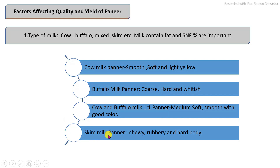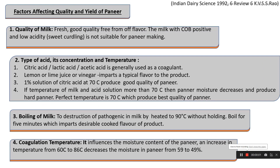If skim milk is used, we get paneer which is hard on the surface, rubbery, and chewy in property. Mostly, in order to get good quality paneer, mixed milk in 1:1 proportion of cow and buffalo is best, giving soft paneer with good textural property and good color. Other important parameters for good quality and quantity of paneer include: quality of the raw milk should be high; use of acids — their concentration and temperature — these three main parameters must be properly controlled. Milk should be properly boiled to disrupt all pathogenic microorganisms. Coagulation temperature also affects the textural property of paneer and should be at least 70 degrees Celsius.